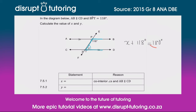That's going to leave us with — what would the answer be? — 62 degrees. So x is going to be 62 degrees, and the reason for it is co-interior angles. I'm going to write 62 degrees in.